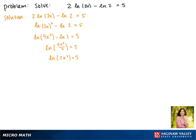We can rewrite this according to our general principle of logarithms: the log base b of x equals y can be rewritten as x equals b to the y power. Remember that the natural log has a base of e, so rewriting our equation gives us 2x squared equals e to the fifth power.